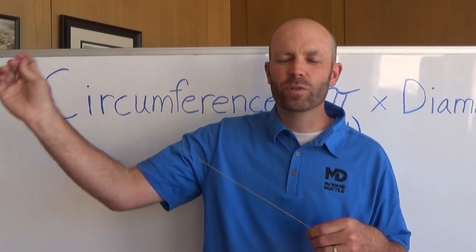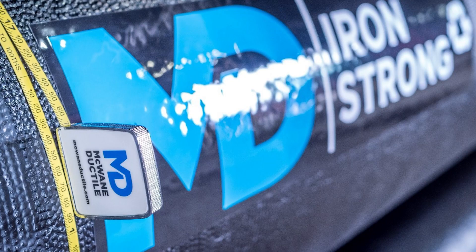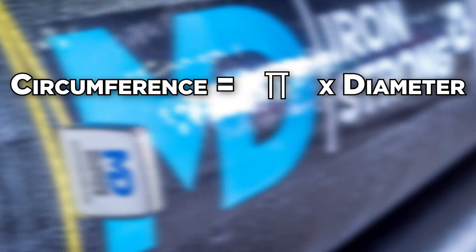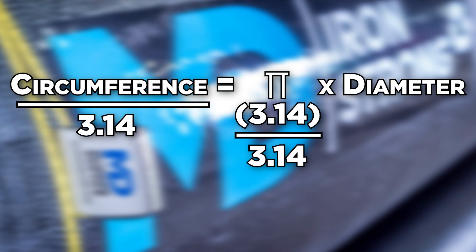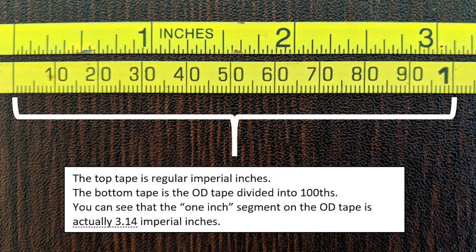We wrap this tape around the circumference of the pipe and look at the side that has hundredths of an inch. To find the circumference of a circle, you multiply pi, or 3.14, times the diameter. We don't want the circumference — we want the diameter, so we divide both sides by 3.14 to get the diameter by itself. That's what they've done with the OD tape: they've taken that formula and backed it into the measurements on the hundredths side. So that one-inch hundredths section is actually 3.14 regular inches long, and wrapping it around the circumference tells you the average diameter.